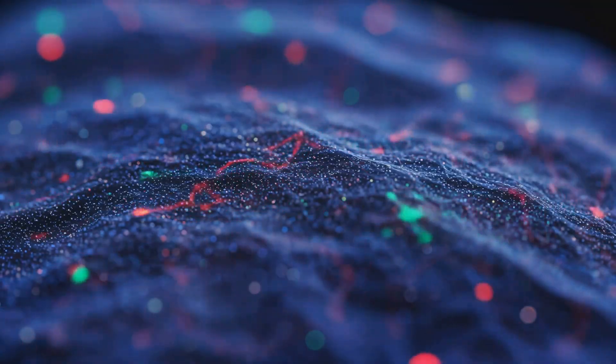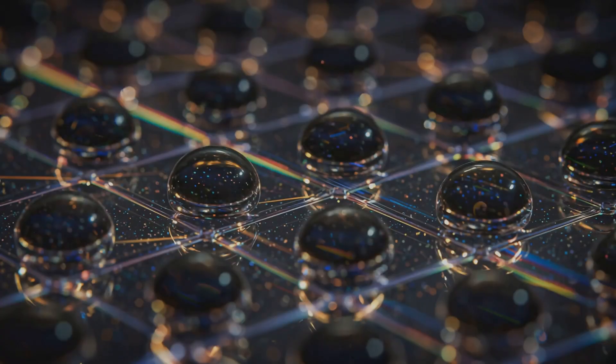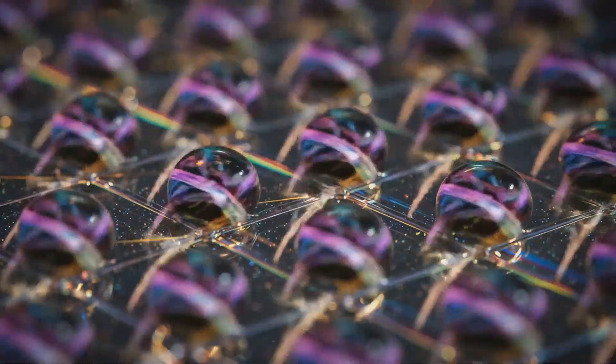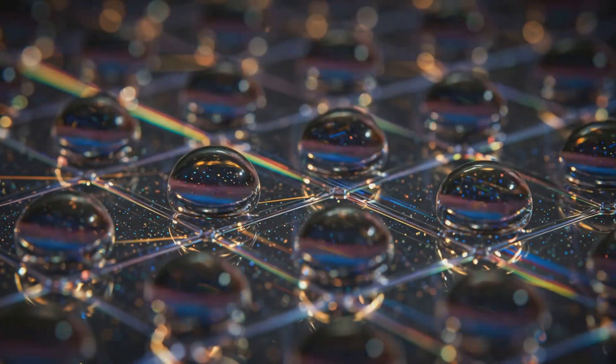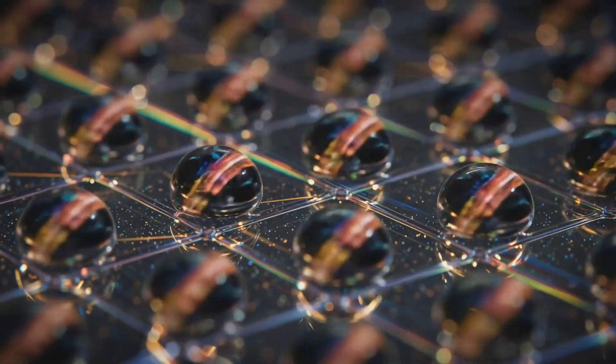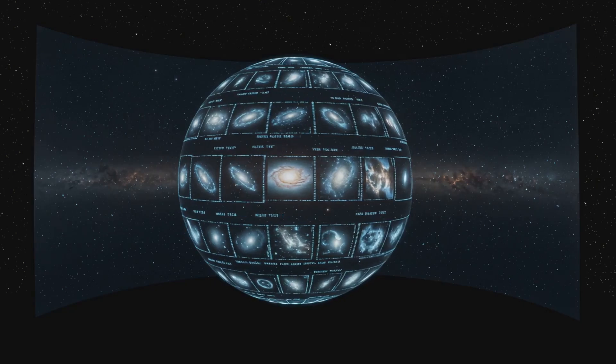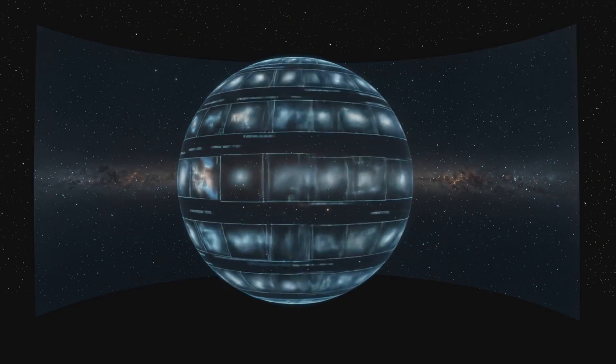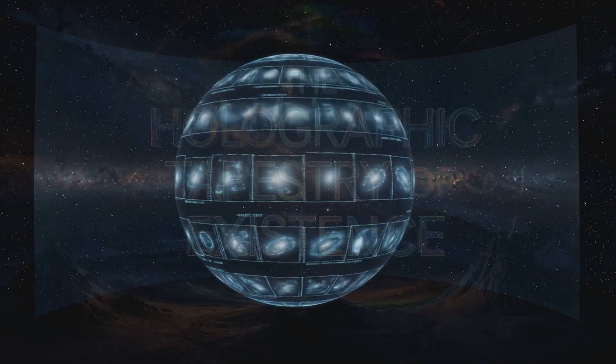This event horizon isn't just a boundary, it's a tapestry of Planck scale cubits, tiny spinning light clocks that encode the very essence of reality. When these cubits interfere constructively, they give rise to the geometry and matter we observe in our universe.